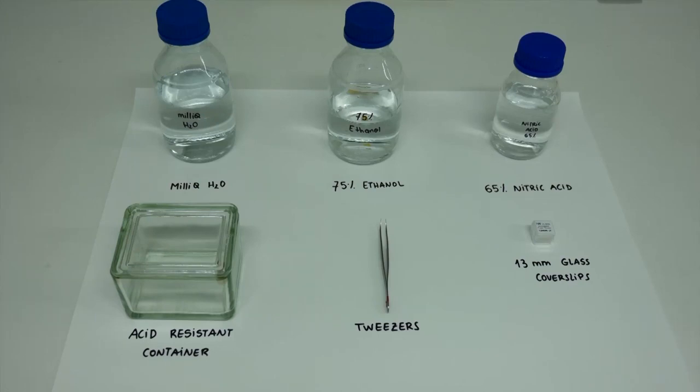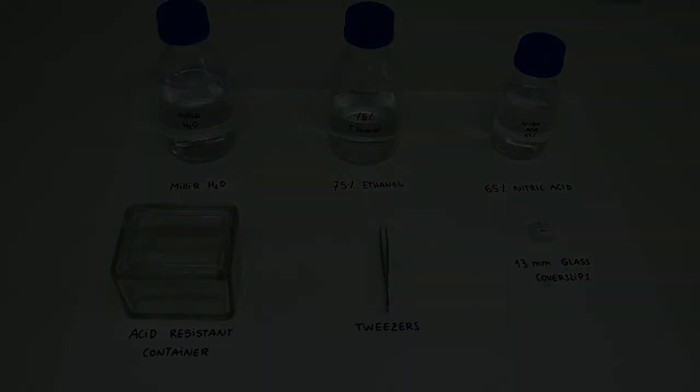For the preparation of the coverslips you will need 13 mm glass coverslips, an acid resistant container, 65% nitric acid, tweezers, MQ water, 75% ethanol...